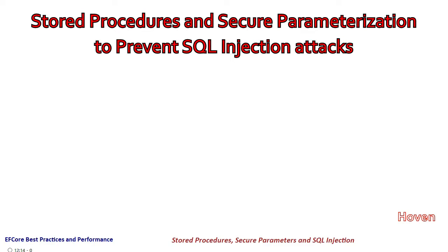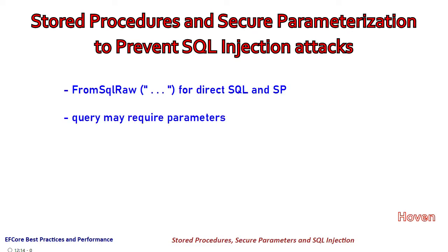Raw SQL queries and stored procedures can be executed with the FromSqlRaw extension. It is very common that these queries and procedures require parameters based on values entered by a user. User-provided parameters are often a source of SQL injection attacks, and in this tutorial we learn how to pass parameters in a safe manner.